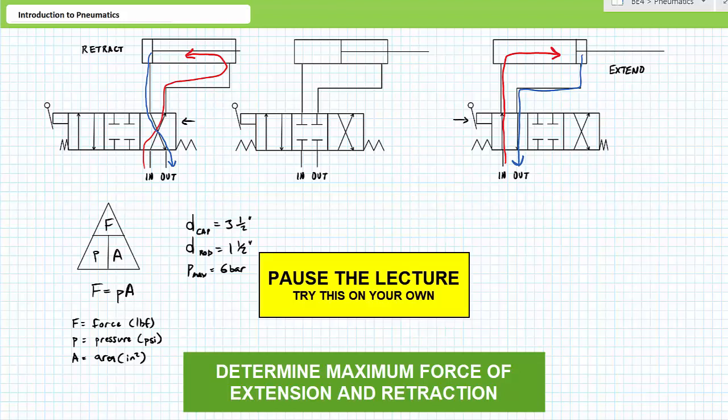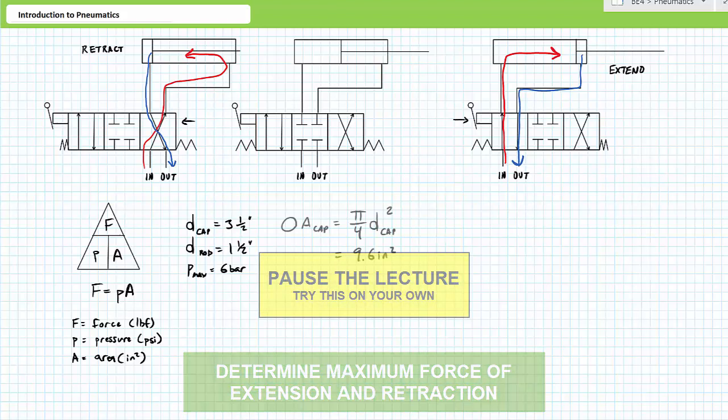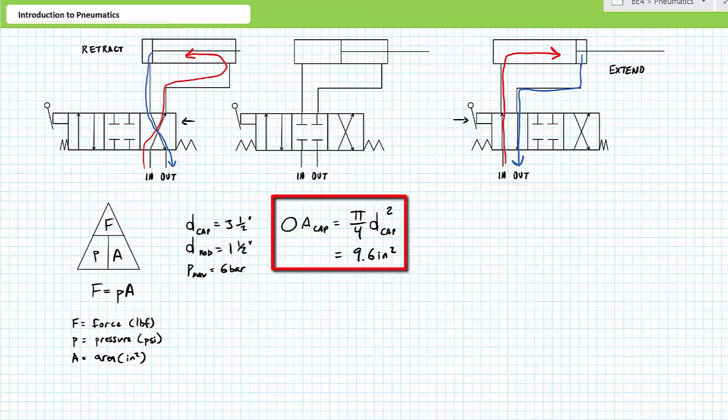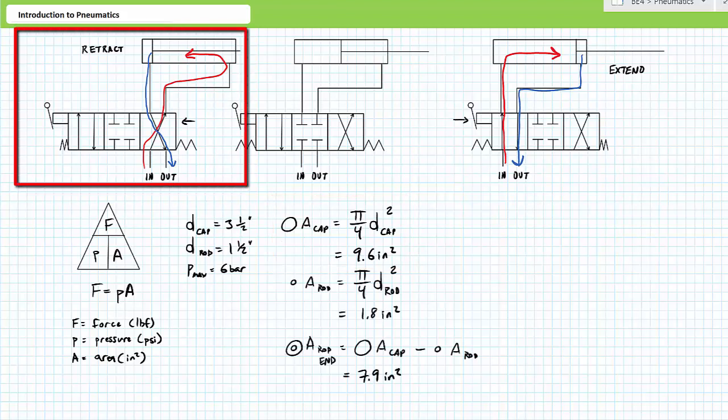If you're tracking, you should have obtained the following results. Extension necessitates pressurized fluid into the cap end port and the rod end port be exhausted at low pressure. During extension, pressurized fluid acts on the full cap end area. The circular cap end area is equal to π/4 times the diameter of the cap squared. Substituting our values results in a cap area of roughly 9.6 square inches.